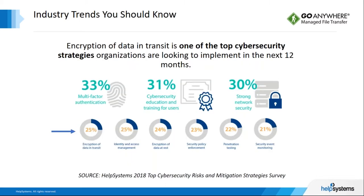Here we see items companies would like to implement in the next 12 months. Making the list is encrypting files in transit as well as at rest. When I was a security and privacy officer, I always recommended that if you had a limited budget and weren't sure where to start, encrypting your data in transit and at rest is a great place to begin. You may not prevent the breach, but you will show due diligence that the compromised information is unusable and most likely avoid hefty fines. Multi-factor authentication, leading the list at 33 percent, should definitely be available in your solution — MFA makes it really tough for someone to crack passwords or get phishing schemes to work.